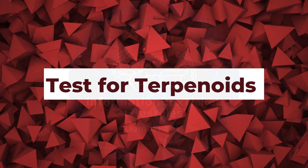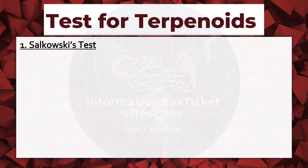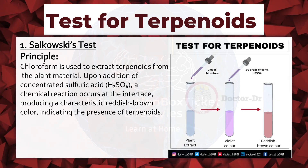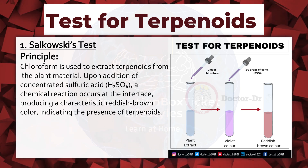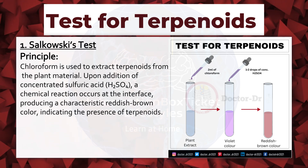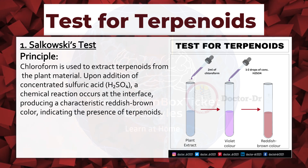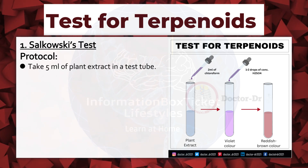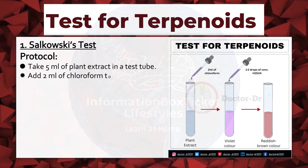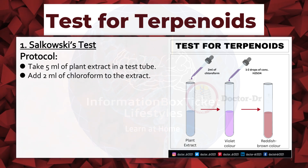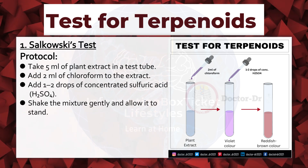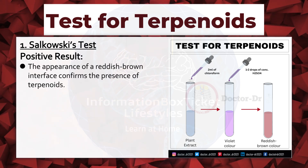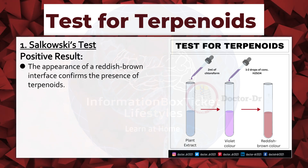Test for Terpenoids. Salkowski's Test. Principle: chloroform is used to extract terpenoids from the plant material. Positive result: the appearance of a reddish-brown interface confirms the presence of terpenoids.